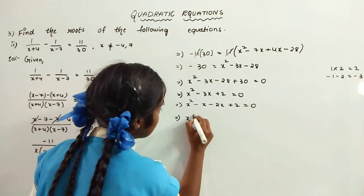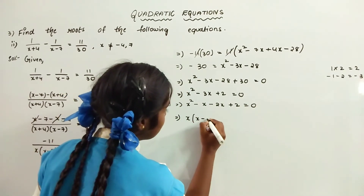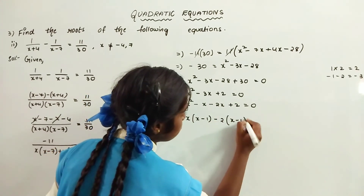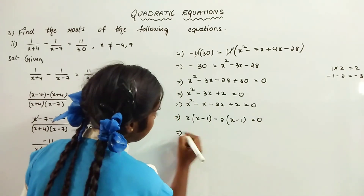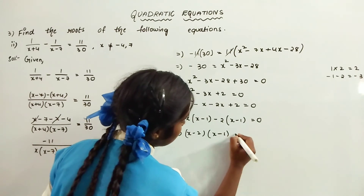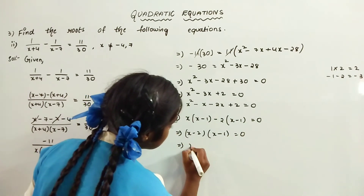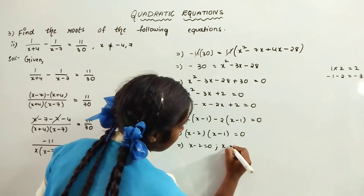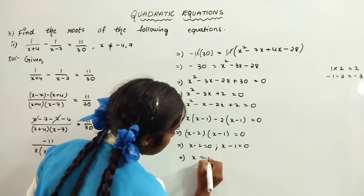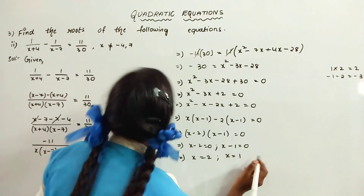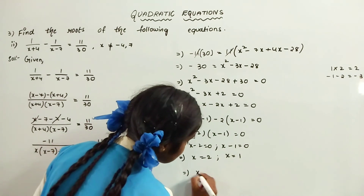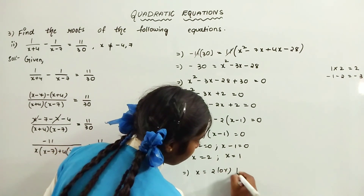That implies x into x minus 1 minus 2 into x minus 1 is equal to 0. That implies x minus 2 into x minus 1 is equal to 0. Therefore x is equal to 2 or x is equal to 1. The roots of the equation are x equals 2 or 1.